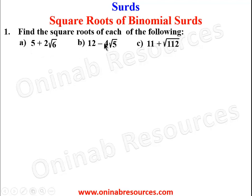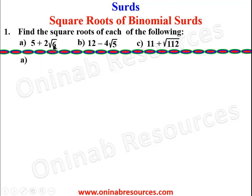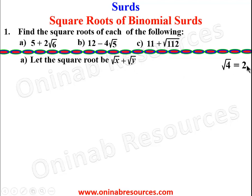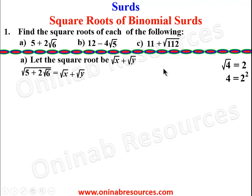These are examples of binomial surds. For part (a), we let the square root equal √x + √y. We know that if √4 = 2, then 4 = 2². Based on this principle, we find the square root of 5 + 2√6. So we say √(5 + 2√6) = √x + √y, and we equate it to √x + √y, which is equivalent to squaring both sides.